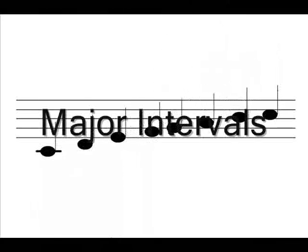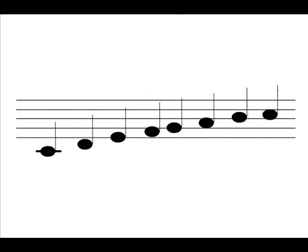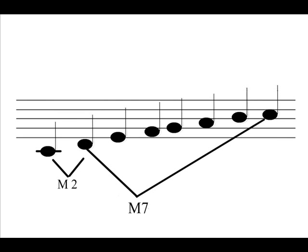Major intervals are 2, 3, 6, and 7 pitches from the root note. In this example, a major 2nd is from C to D, a major 3rd can be from C to E, a major 6th can be from D to B, and a major 7th in this example is from D to C.